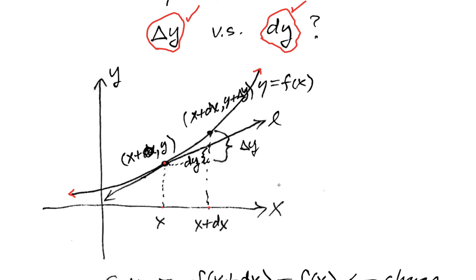If you're talking about the independent variable, there's really no difference between a change delta x and dx. So I'm using my change in x as dx. I've got a second point over here on the curve: x plus dx, y plus delta y. Because this has led to a certain change in the actual function value. Over here I'm at the point x, y. Here I'm at the point x plus dx, y plus delta y.